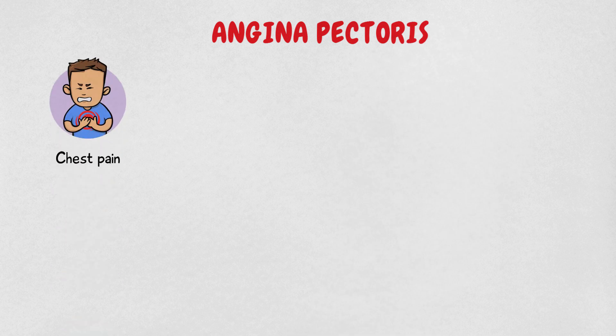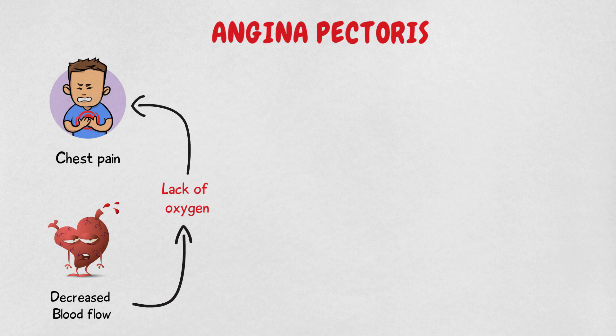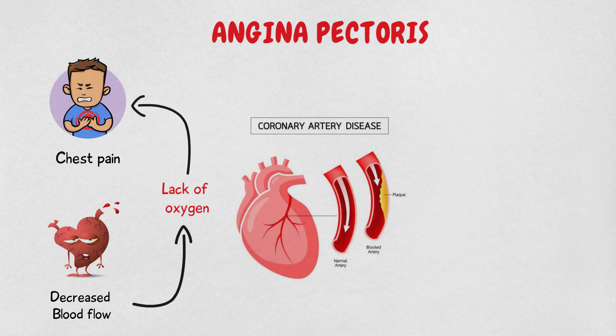Angina pectoris, or just angina, is temporary chest pain or discomfort caused by decreased blood flow to the heart muscles. Because of the decreased flow of blood, there is not enough oxygen to the heart muscles, resulting in chest pain. One of the most common causes of angina is coronary artery disease, in which there is narrowing of the coronary arteries.